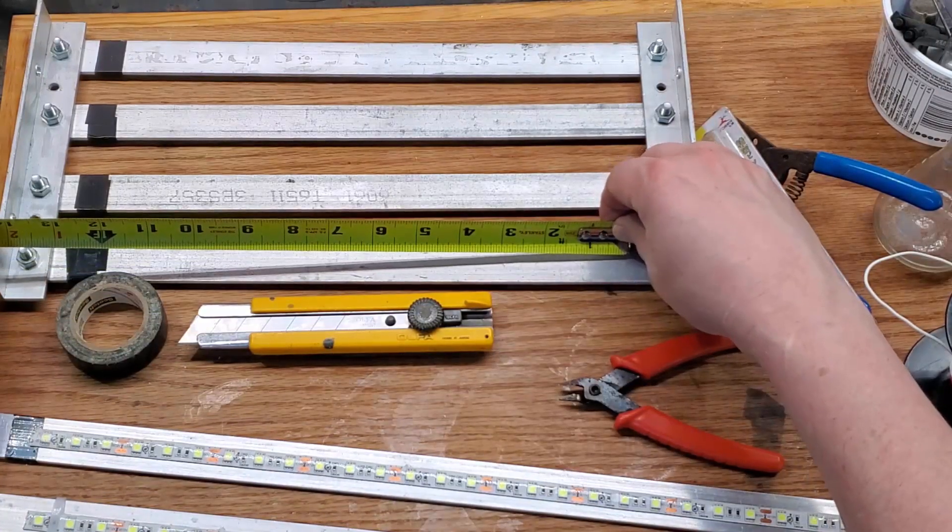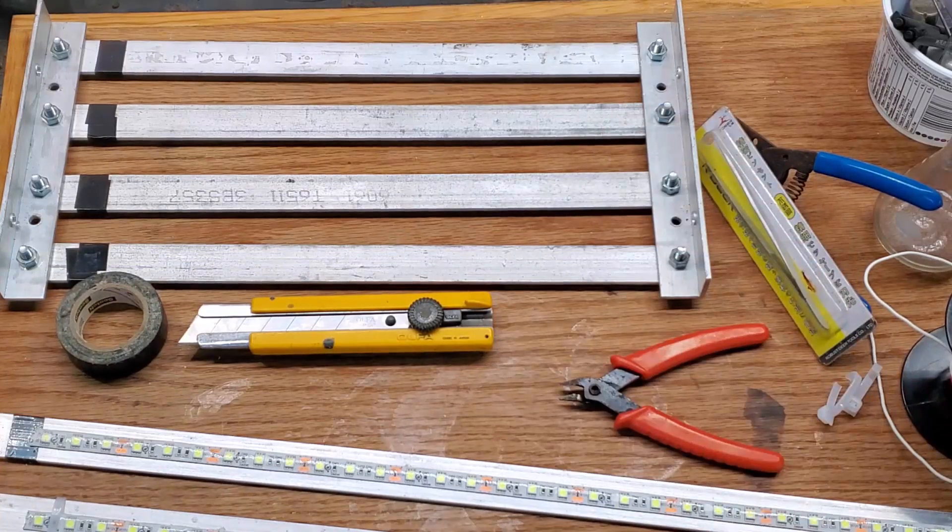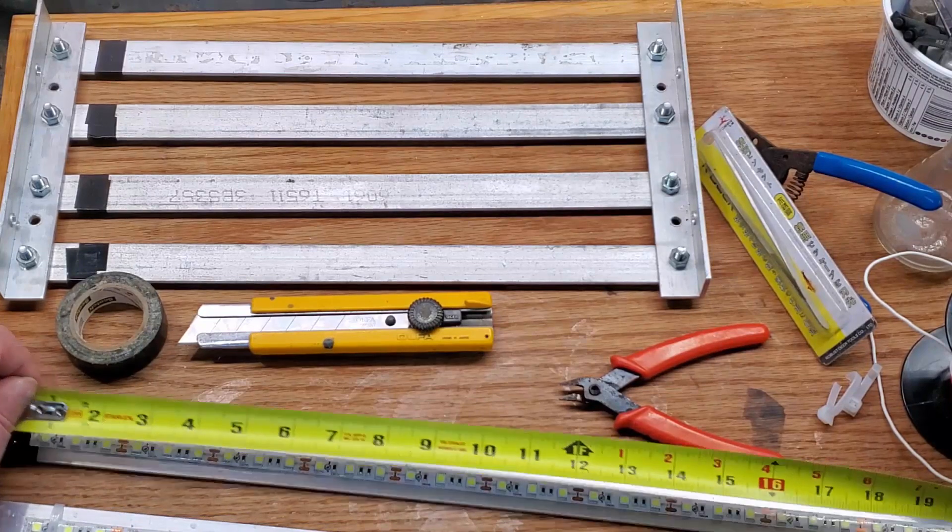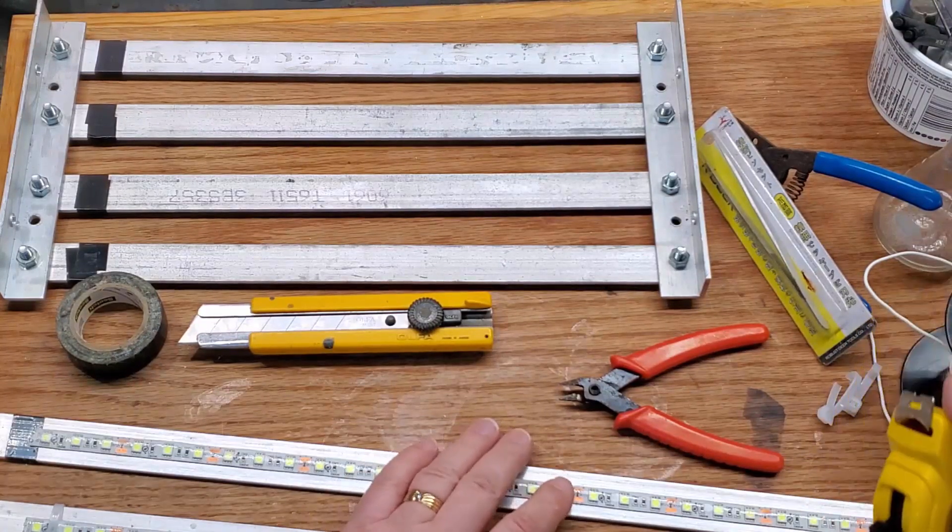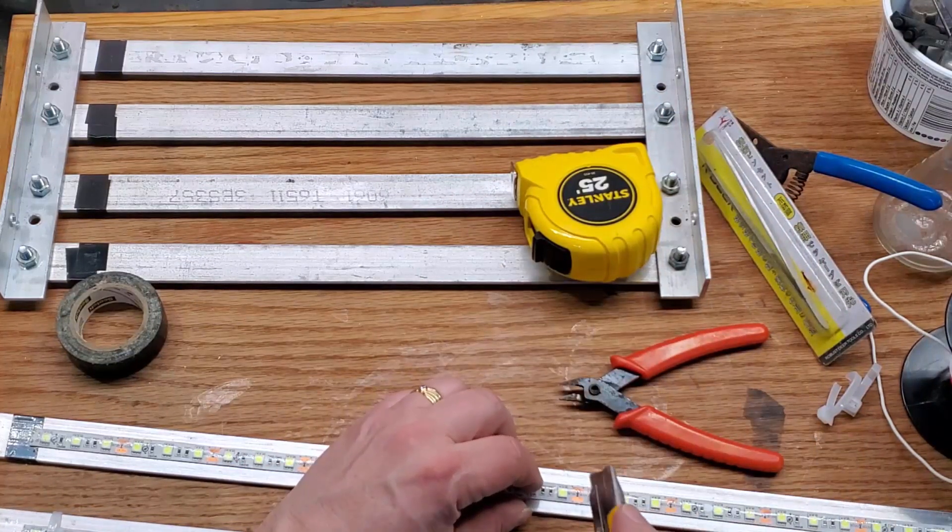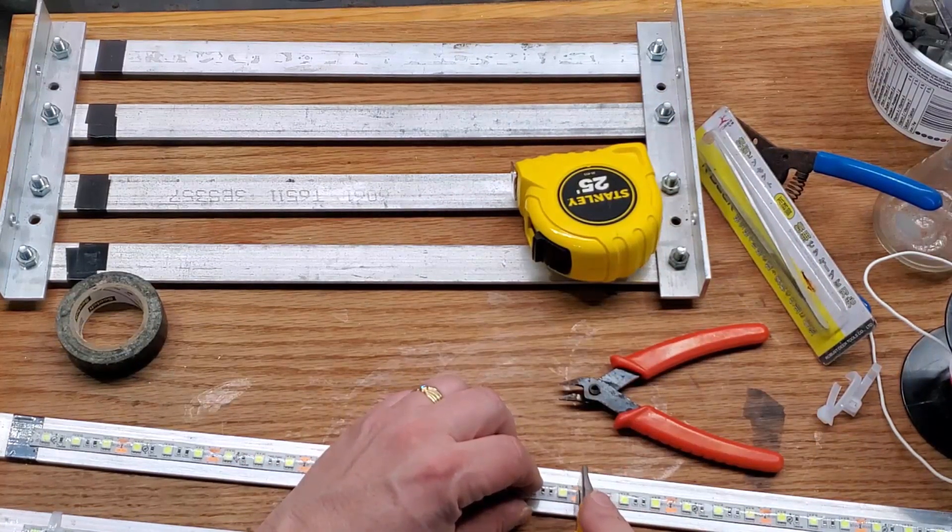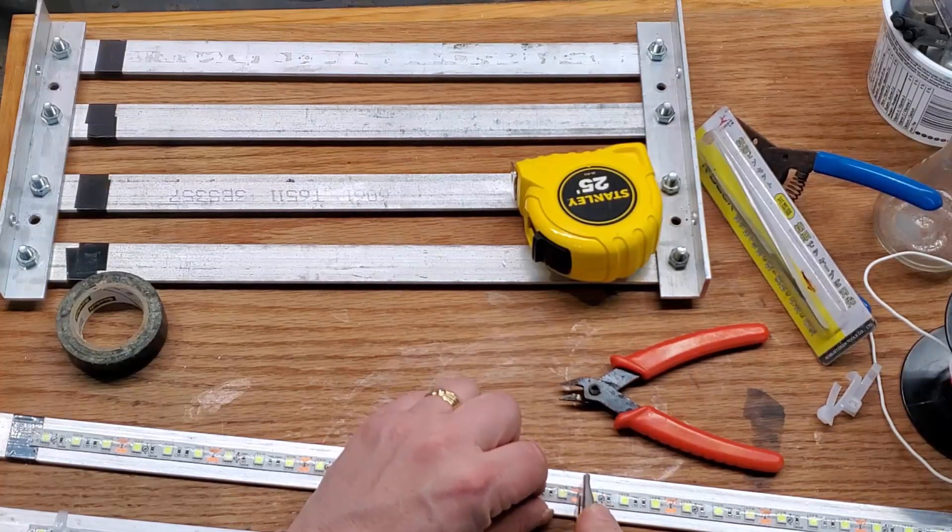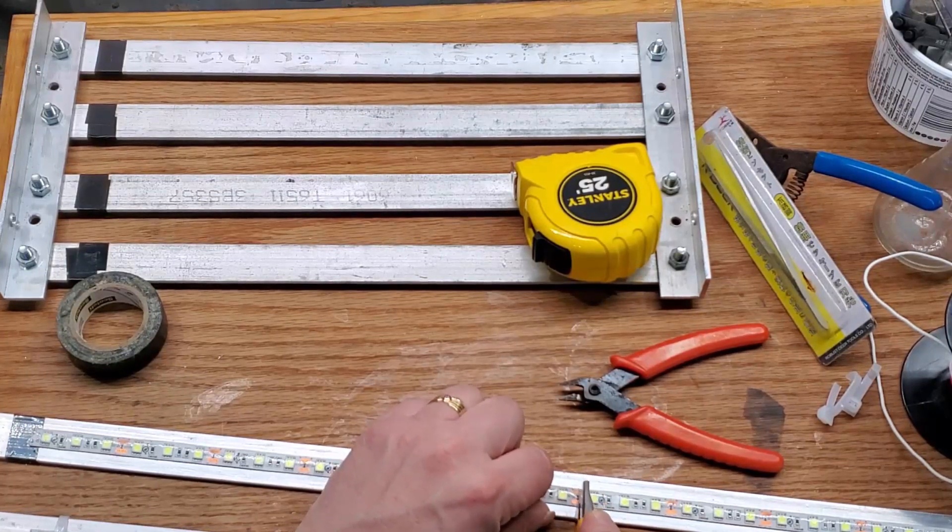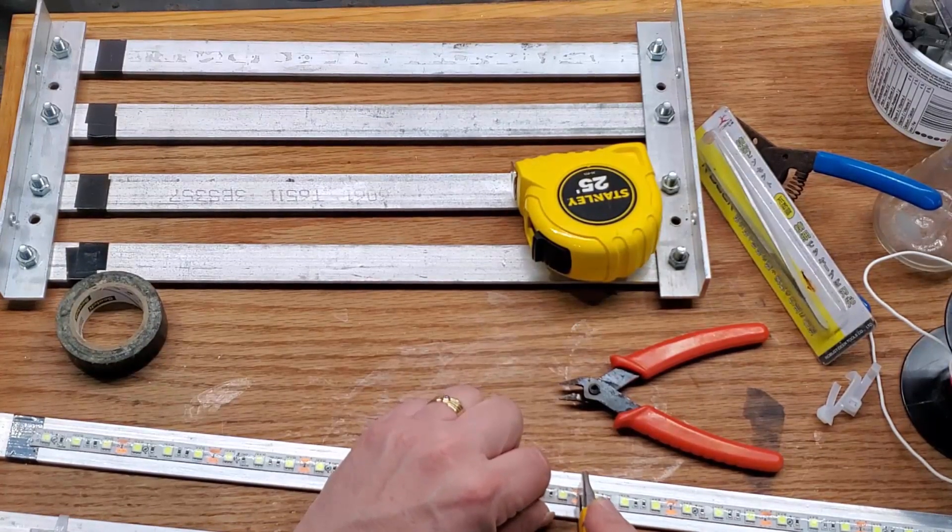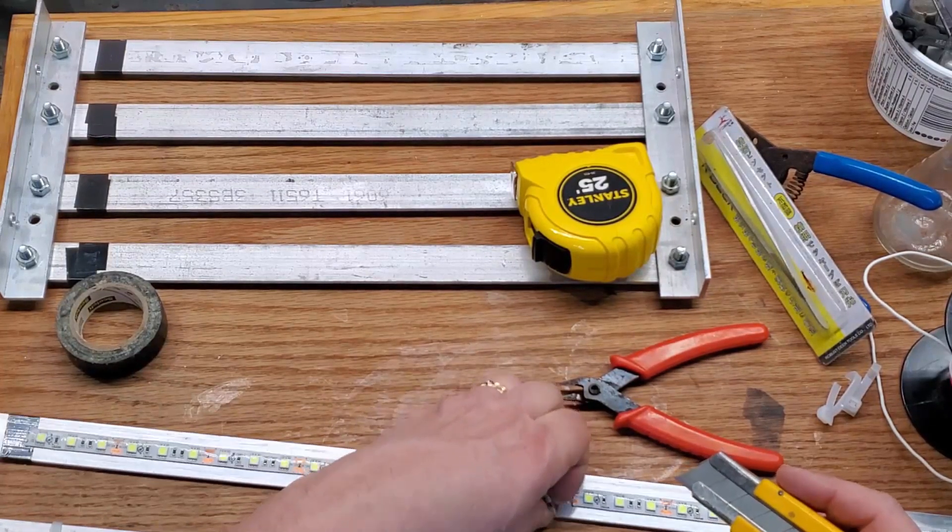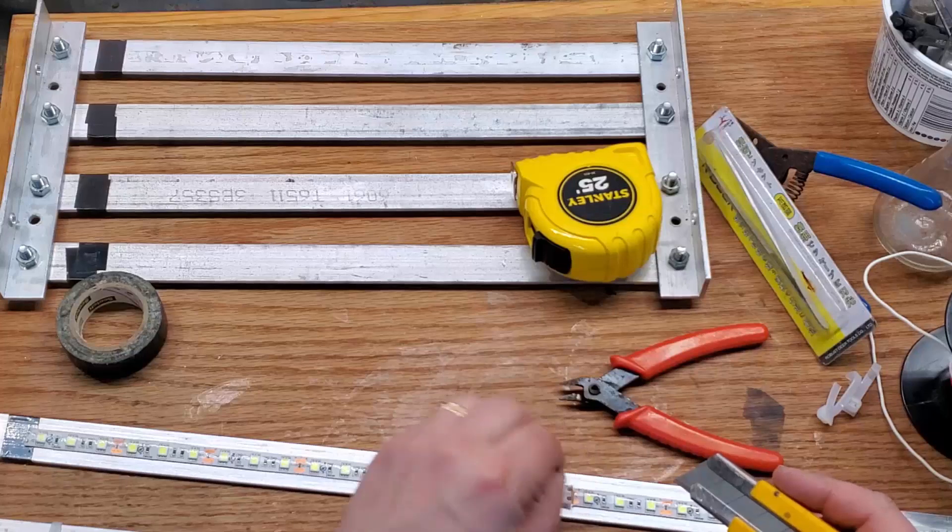The copper pads—every three of these LED strips there are two copper pads, and those are the places that you can cut these. I'm cutting one right here now. Normally you can just solder straight to those, but the tape was a little old and it was not accepting the solder very well.